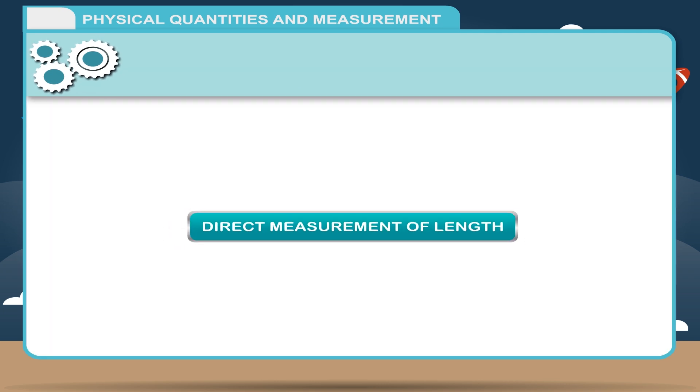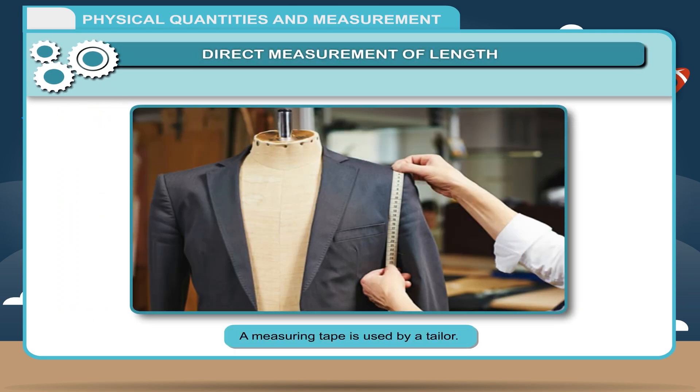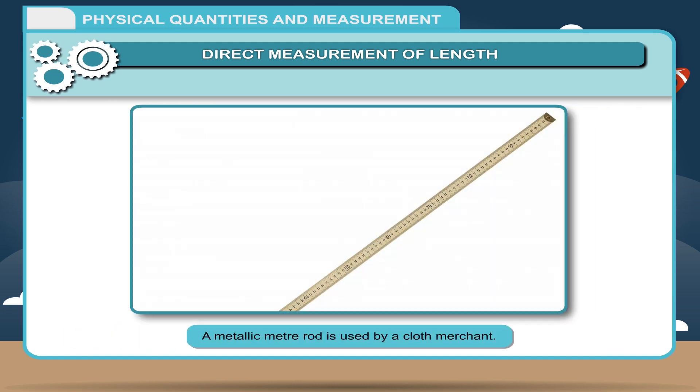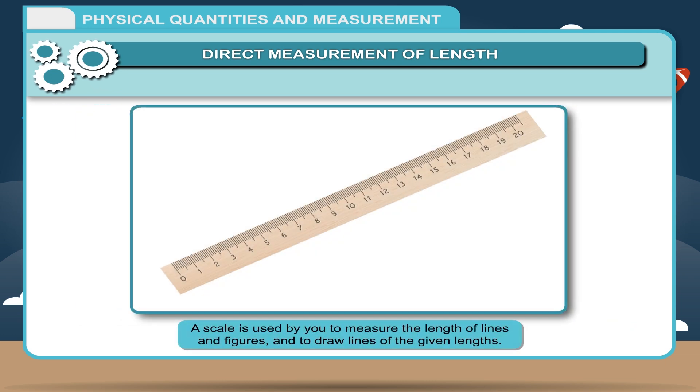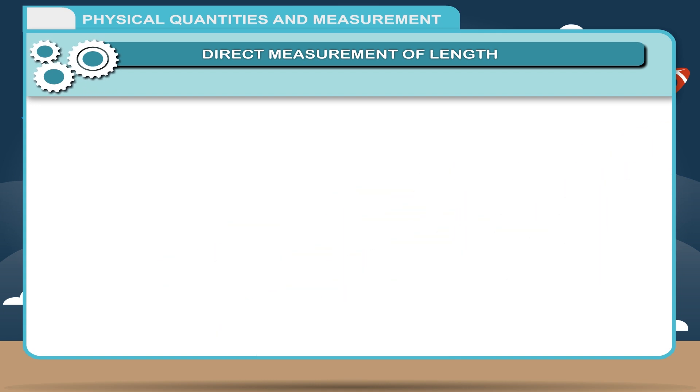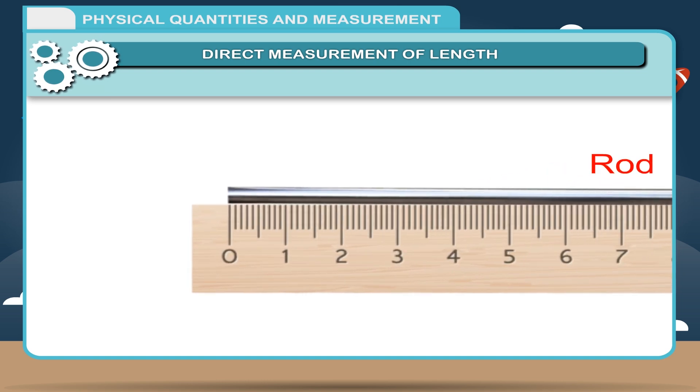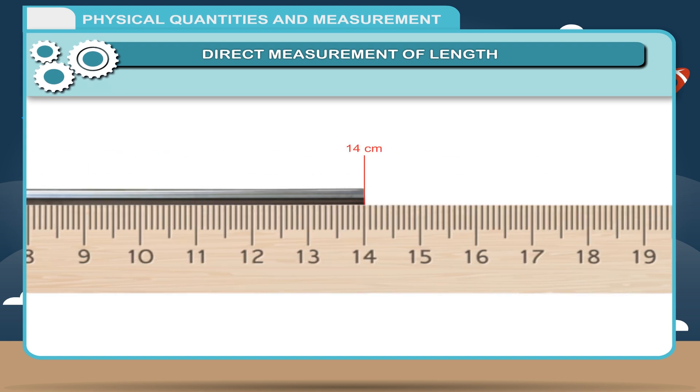Direct measurement of length: To measure the length, we need some measuring devices. For example, a measuring tape is used by a tailor. A metallic meter rod is used by a cloth merchant. A scale is used by you to measure the length of lines and figures and to draw lines of the given lengths. Normally, we use a meter scale or half meter scale for measuring the length. The scale is calibrated in centimeters and millimeters. Suppose, we want to measure the length of a rod. The zero mark on the scale is set to coincide with one end of the rod as shown in the figure. The reading on the other end gives the length of the rod.